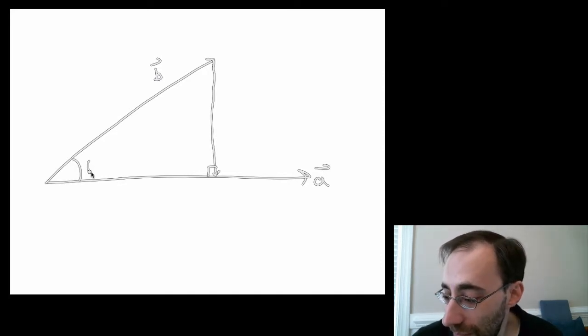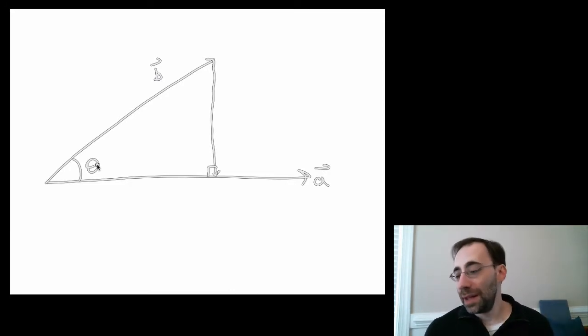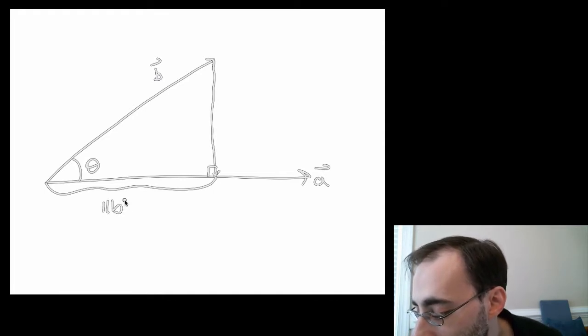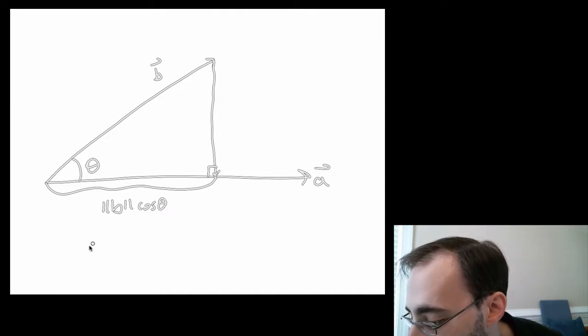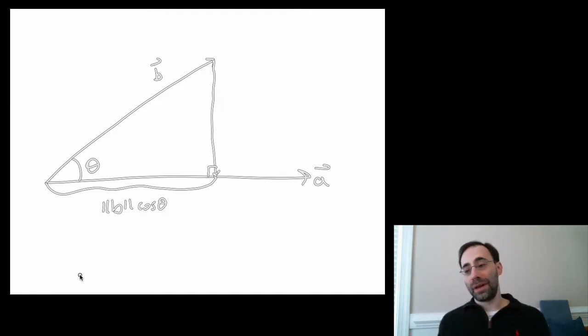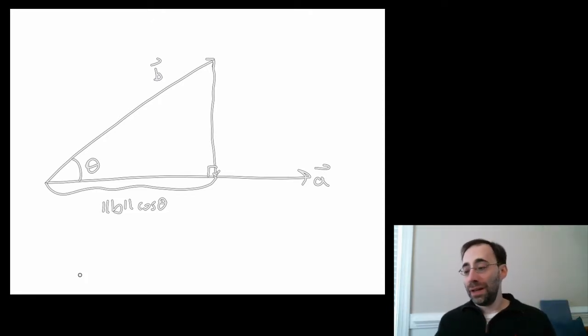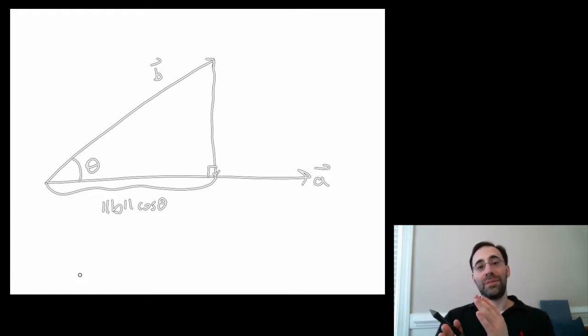Let's call this angle theta, which is the angle between the vectors a and b. And this over here is b cosine theta. So the part of b that's in the same line as a is b cosine theta.